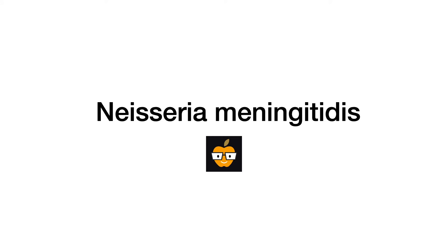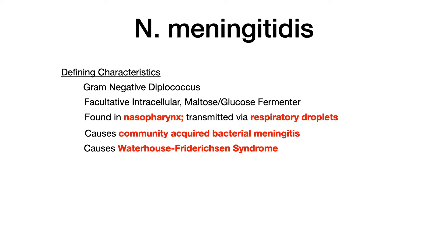This video is on Neisseria meningitidis. Some defining characteristics. Neisseria meningitidis is a gram-negative diplococcus, and that's an extremely unique image. I'll show you that on the next slide, but you absolutely need to know what this looks like.